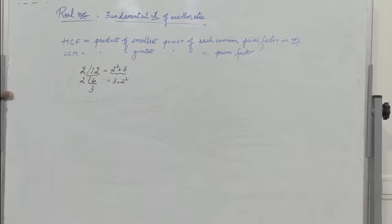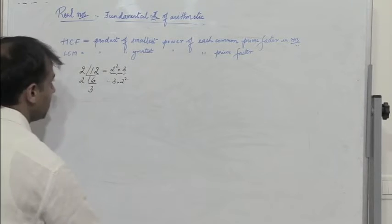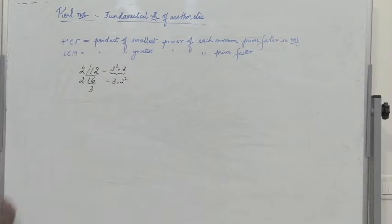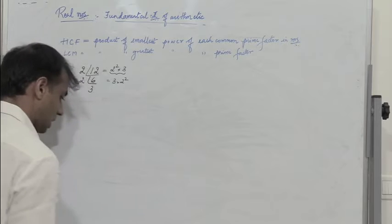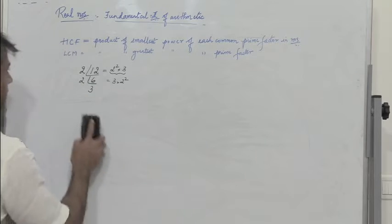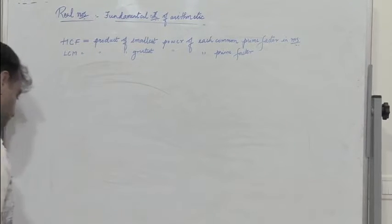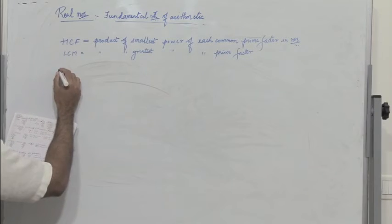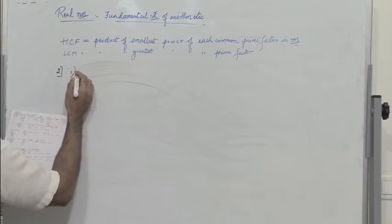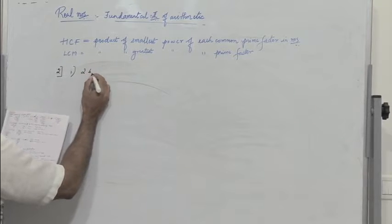Using this fundamental theorem of arithmetic, we can find the HCF and LCM of a given set of numbers. We find the prime factorization of any given number. Let's take the first problem: we need to find the HCF and LCM of 26 and 91.